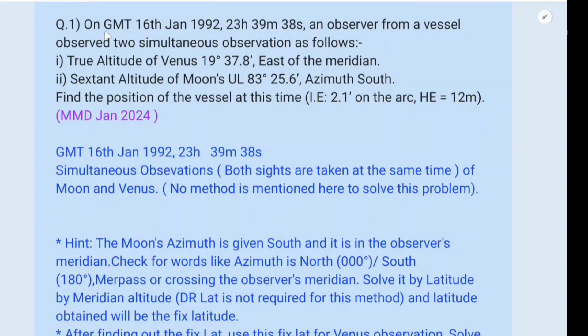The question is on GMT 16th Jan 1992, 23 hours 39 minutes 38 seconds. An observer from a vessel observed two simultaneous observations as follows: 1) True altitude of Venus 19 degrees 37.8 minutes east of the meridian. 2) Sextant altitude of Moon's upper limb 83 degrees 25.6 minutes, azimuth south.